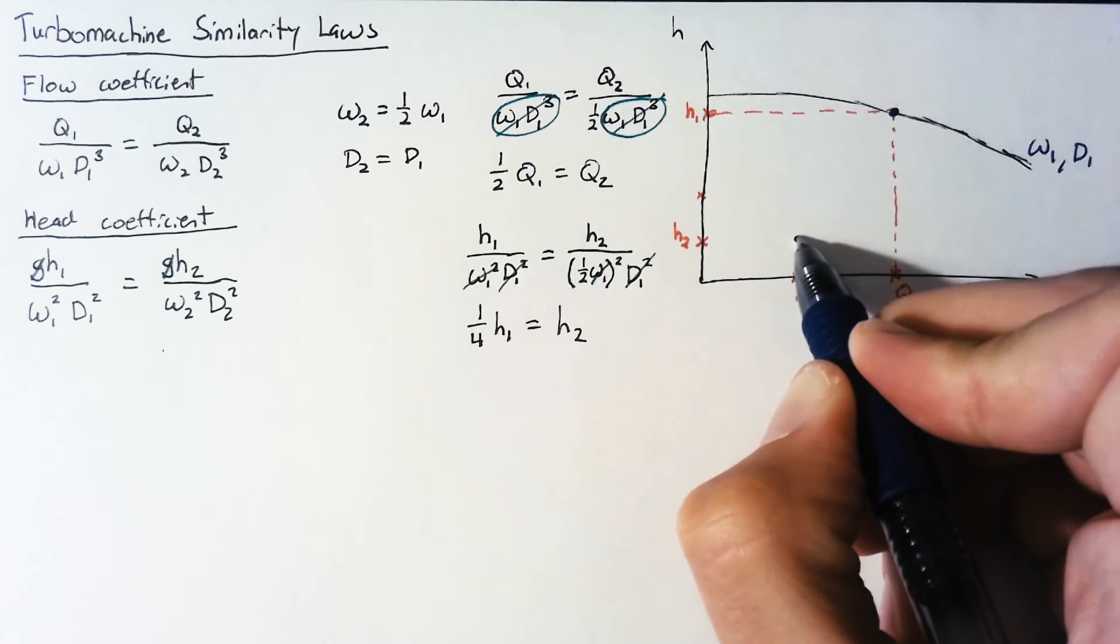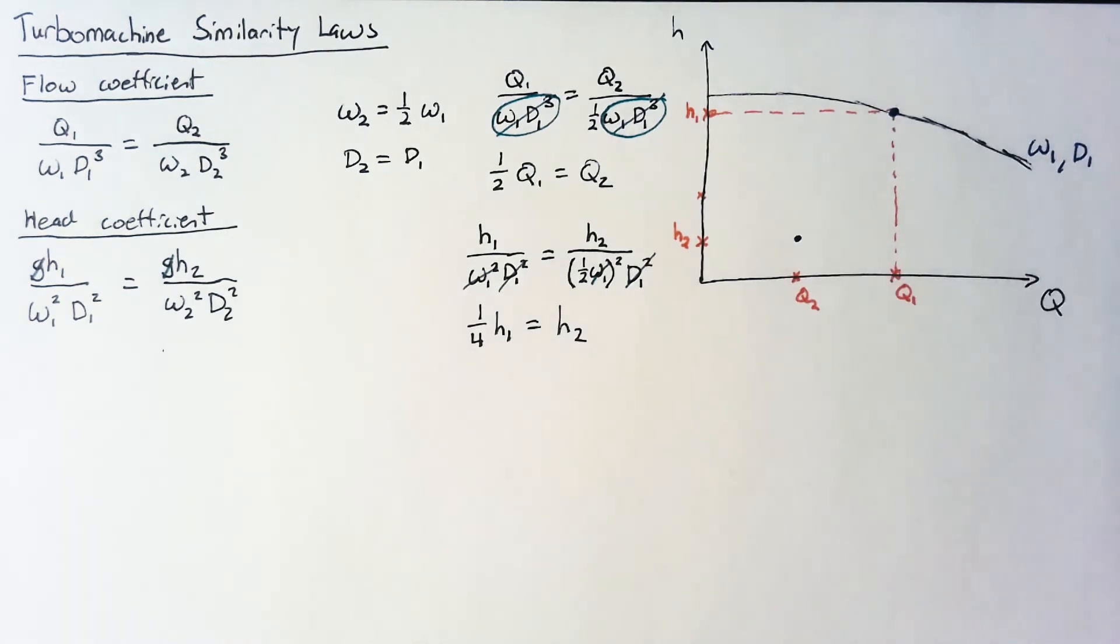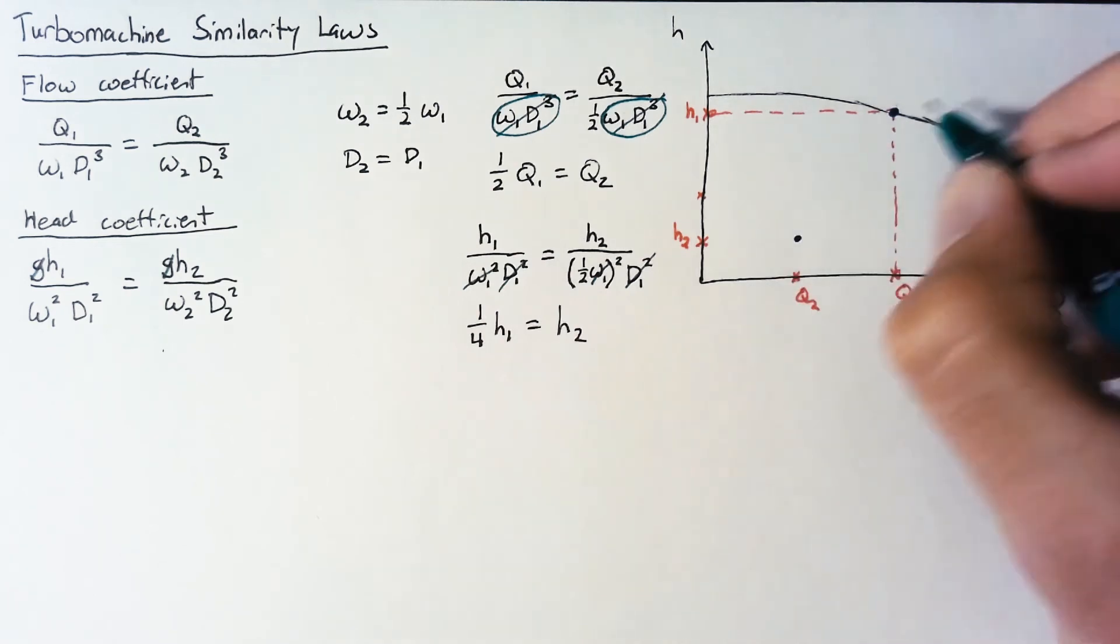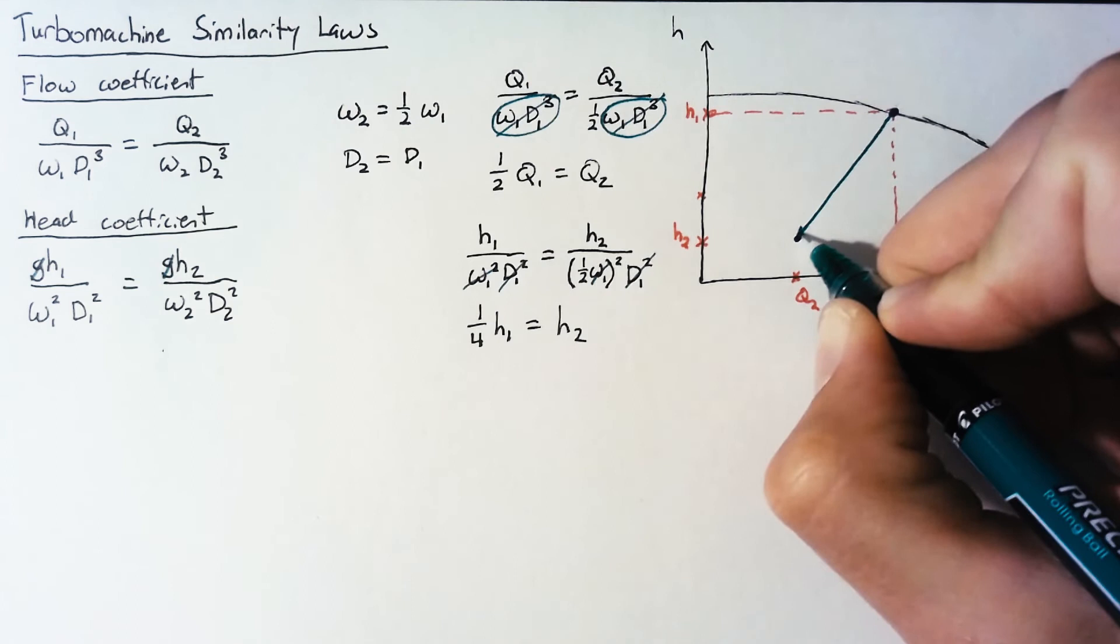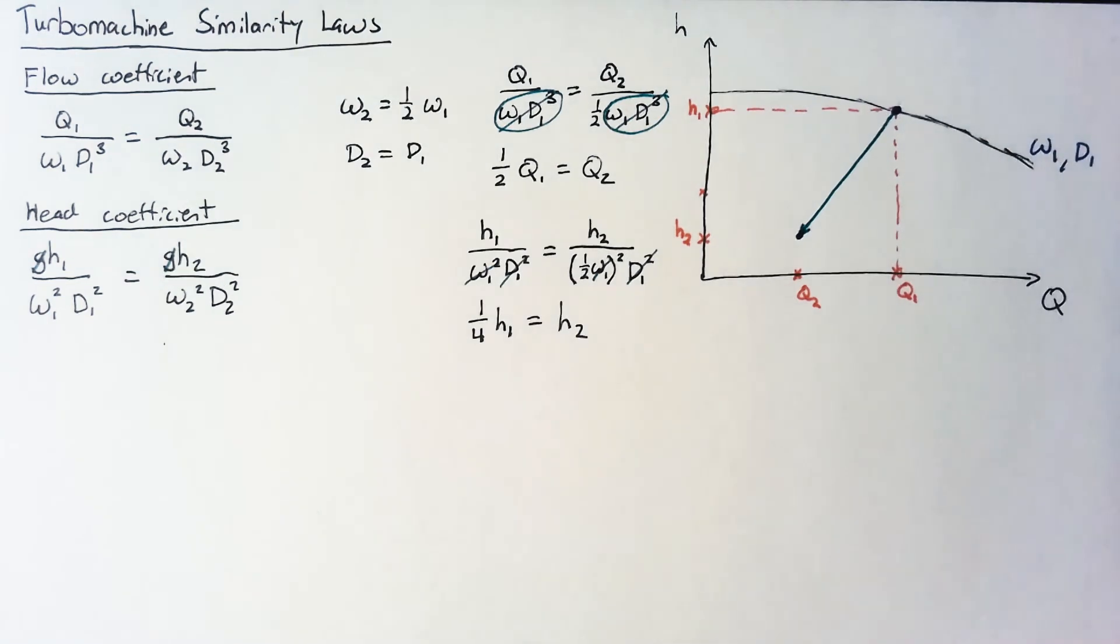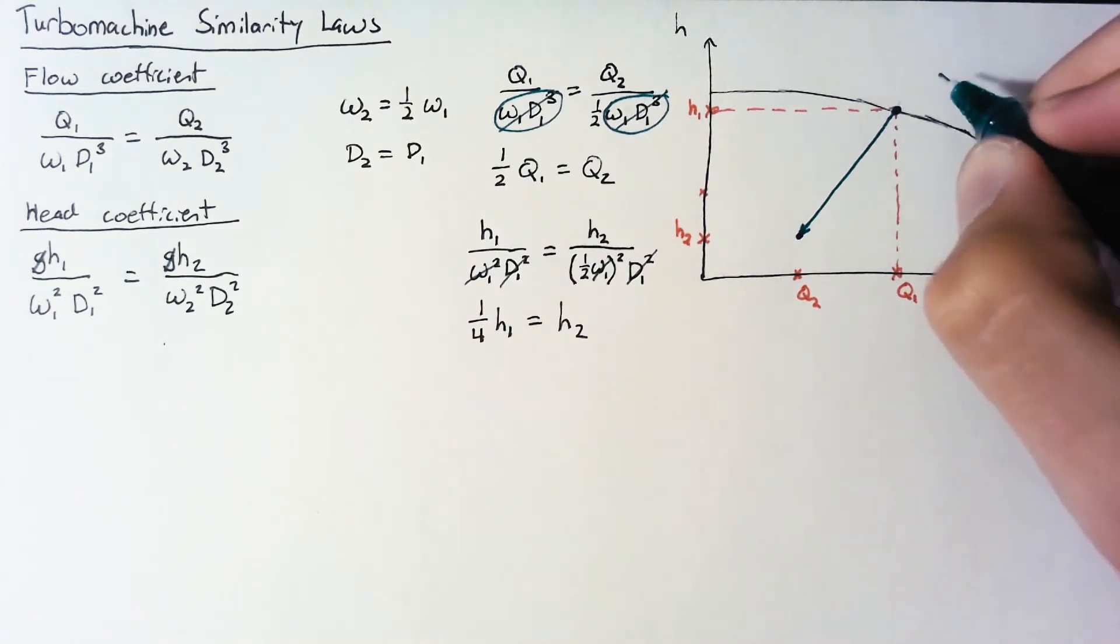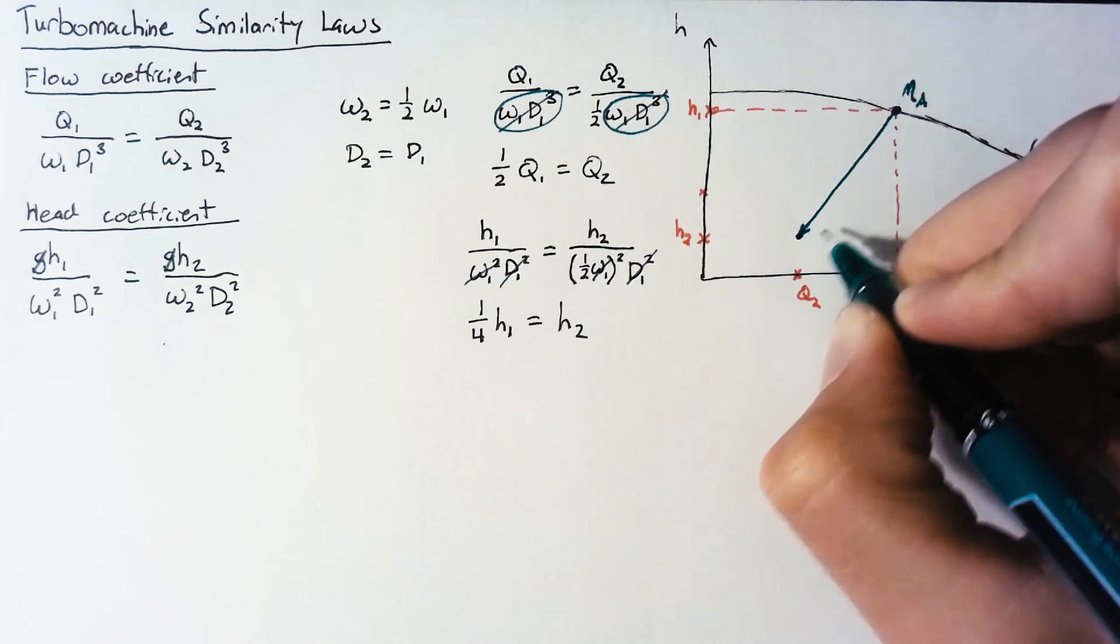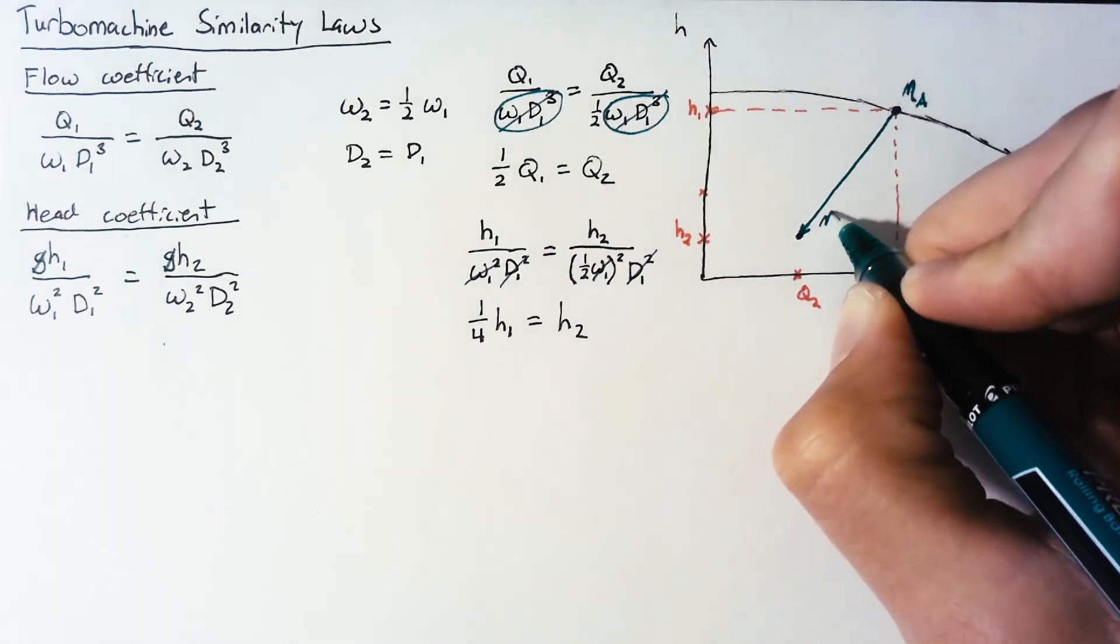So we can find how this single point changes based on how these two values change. So this point is going to move down and to the left. I said a couple times that these are happening at the same point on the pump curve and exactly what I mean by that is that our efficiencies are going to stay the same. So if this is the efficiency at some point A on our curve, well the efficiency down here is still going to be that same efficiency.